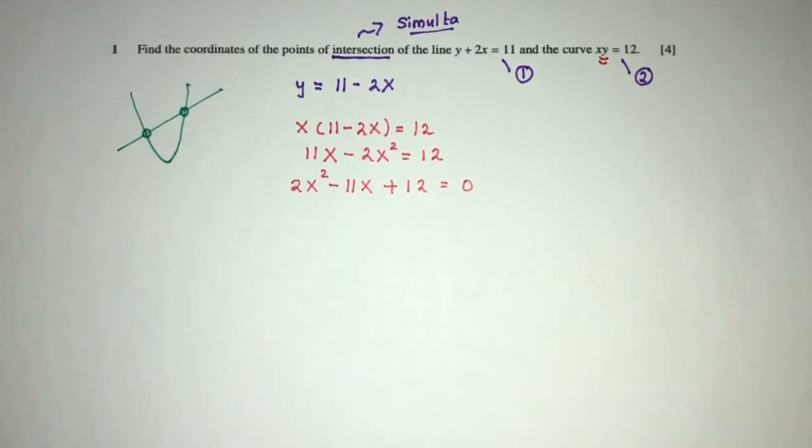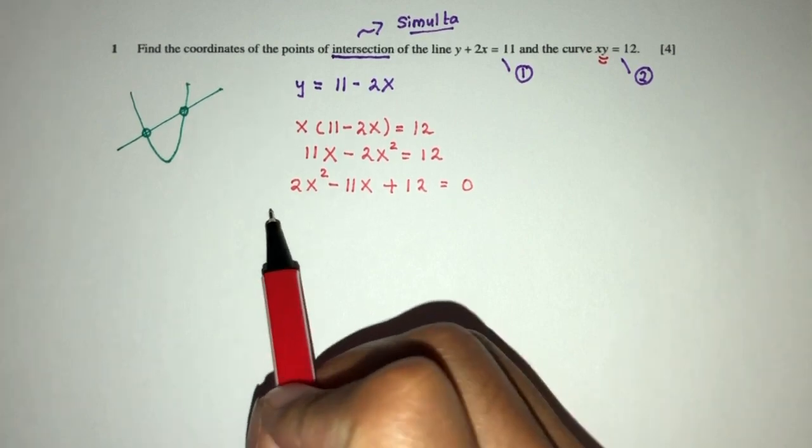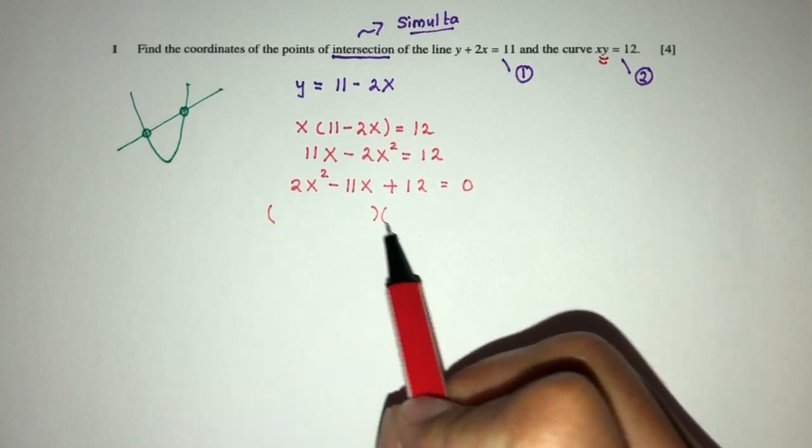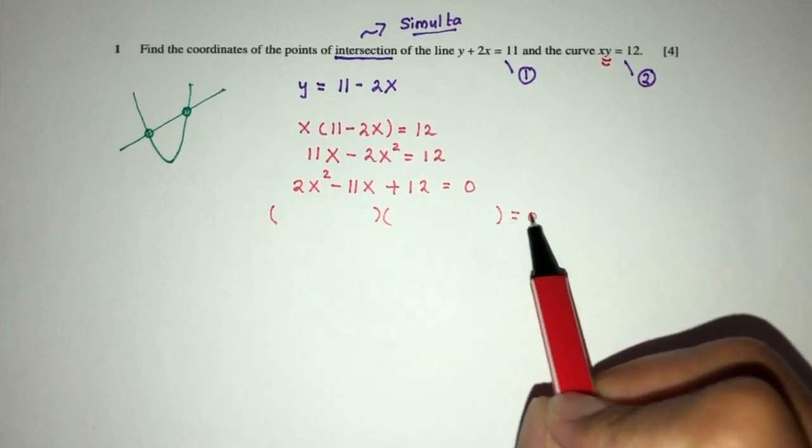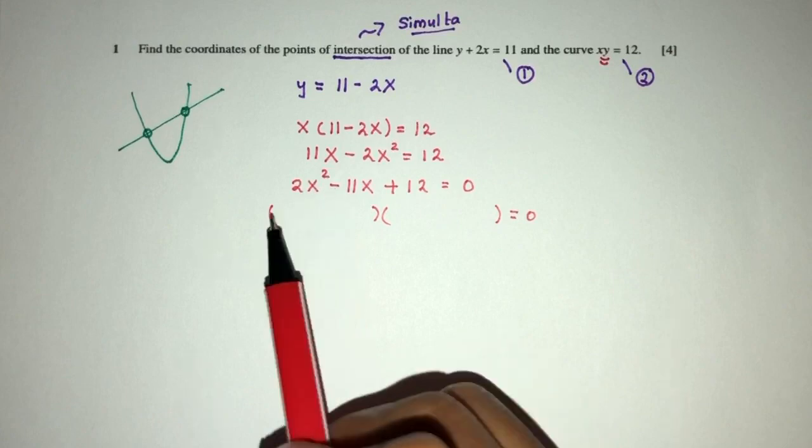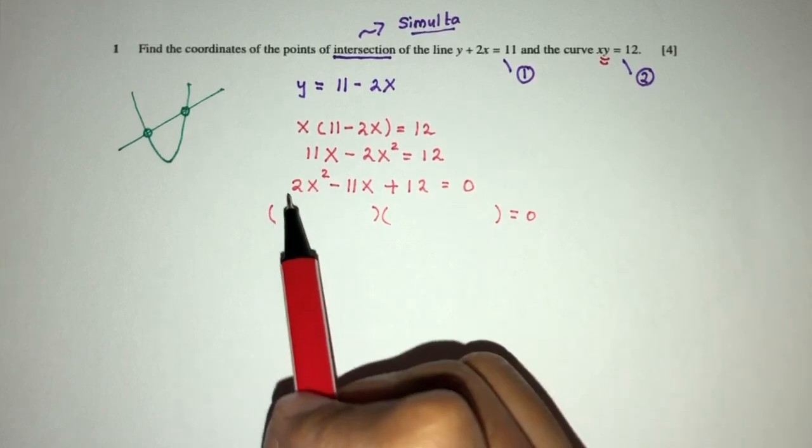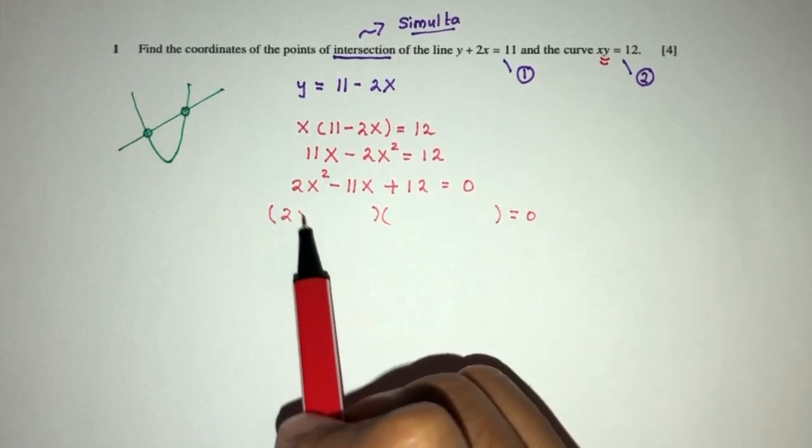As you can see, we have a quadratic equation. We can factorize or use the formula to solve this equation. I will go with factorization. Because we have x squared, we have to have two brackets. Now what is 2x²? It is 2x times x.